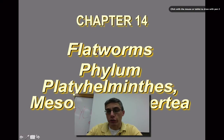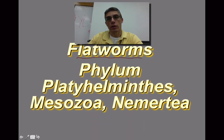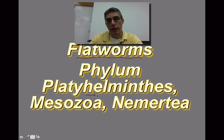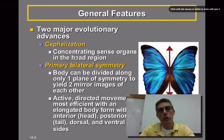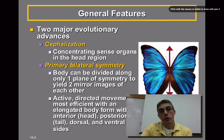Welcome to our very first screencast for chapter 14, where we are going to focus on the flatworms. There are several different phyla that actually belong to this group of animals, but we are going to focus primarily on the phylum Platyhelminthes. When looking at this group of animals, it's really important to understand that they have two major evolutionary advances when compared to the animals from chapter 12, the sponges, and chapter 13, the cnidarians.